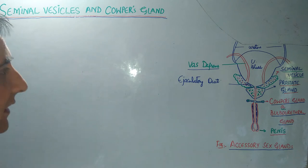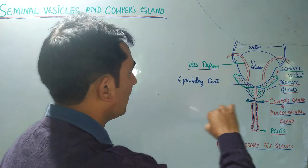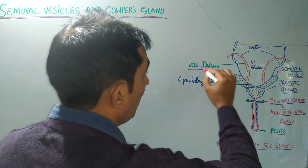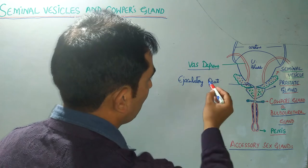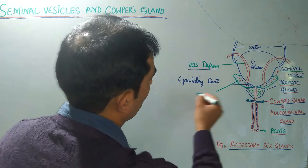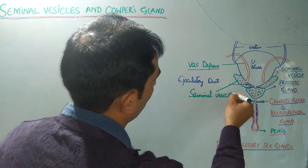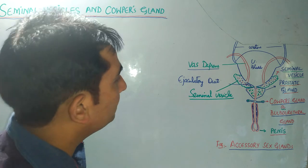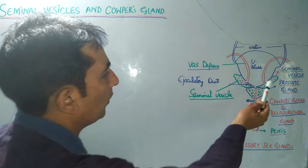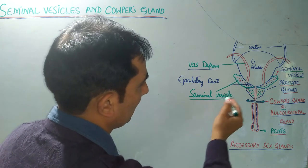When we try to locate these sex glands in this diagram, you can see these are the vas deferens. The vas deferens are coming from the testes on either side. This is the urinary bladder, these are the ureters. Once the vas deferens descend down, there is a very important sex gland which we call the seminal vesicle. They are two in number, one on either side.